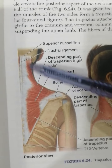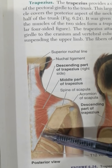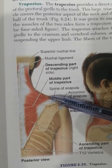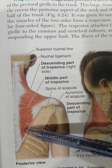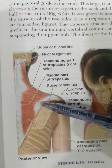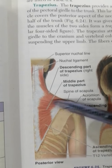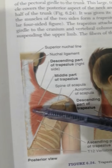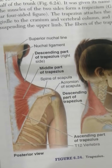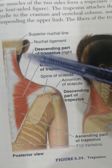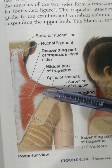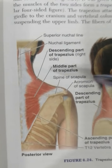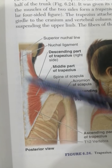The trapezius has descending fibers, middle fibers, and ascending fibers. Whenever the descending fibers contract, they cause elevation of the scapula. When the ascending fibers contract, they cause depression of the scapula. The middle fibers, when they contract, cause retraction of the scapula. When the ascending and descending fibers act together, they rotate the glenoid cavity superiorly.